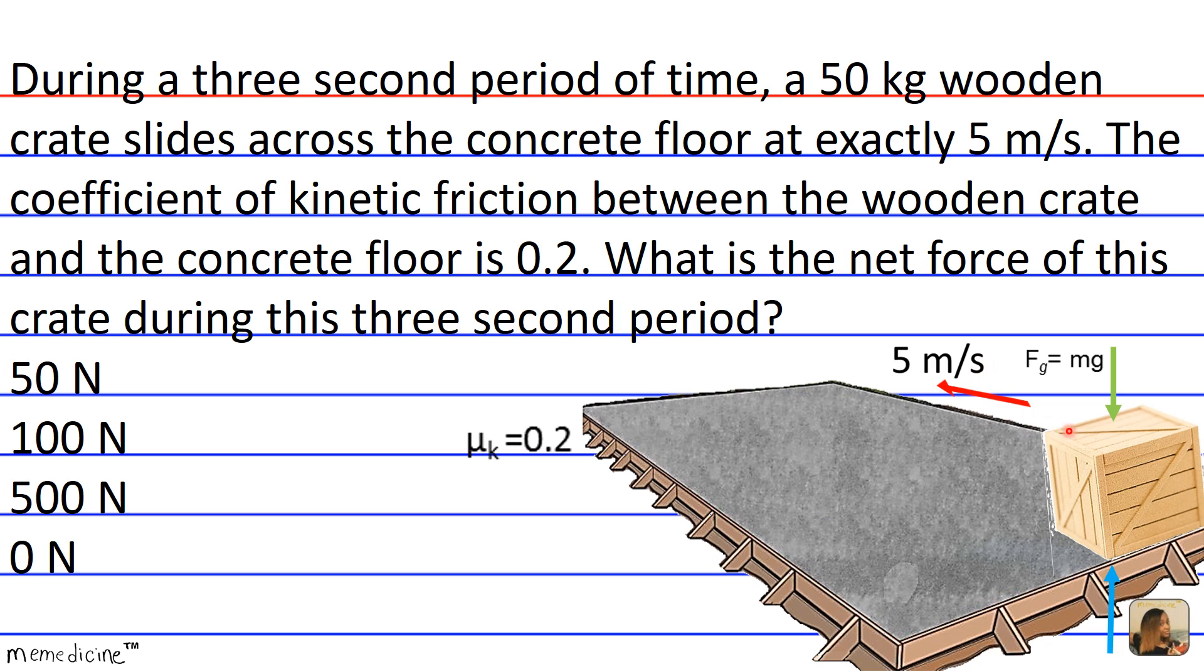Now let's deal with the forces present in the horizontal direction. The horizontal forces are going to be the force due to kinetic friction pushing opposite the direction of the velocity, and you can call this an applied force F push, whatever is kind of propelling the crate to move at 5 meters per second with a constant velocity.